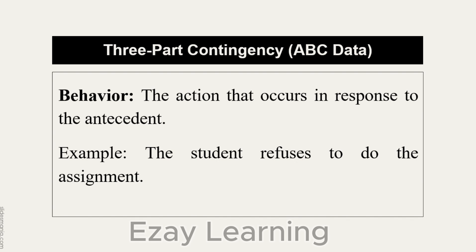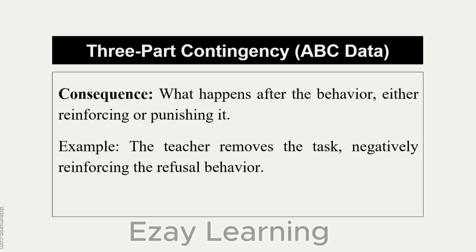What might have happened before this behavior? The teacher might have asked the student to do the assignment. And then the consequence, which is what happens after the behavior, either reinforcing or punishing it. So the behavior will be followed by reinforcement or punishment. Example: the teacher removes the task, negatively reinforcing the refusal behavior.